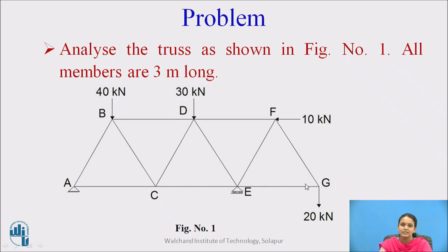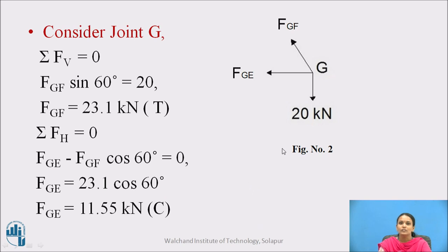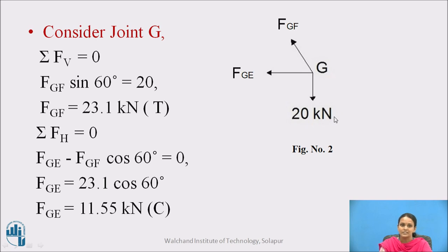Observing the entire truss, at joint G you will get only two unknowns: the external force and the force in member FG and force in member GA. So at joint G, the unknowns are forces in member GF and member GA, and one external load of 20 kN. Since there are two equilibrium conditions, we can easily find out these two forces.